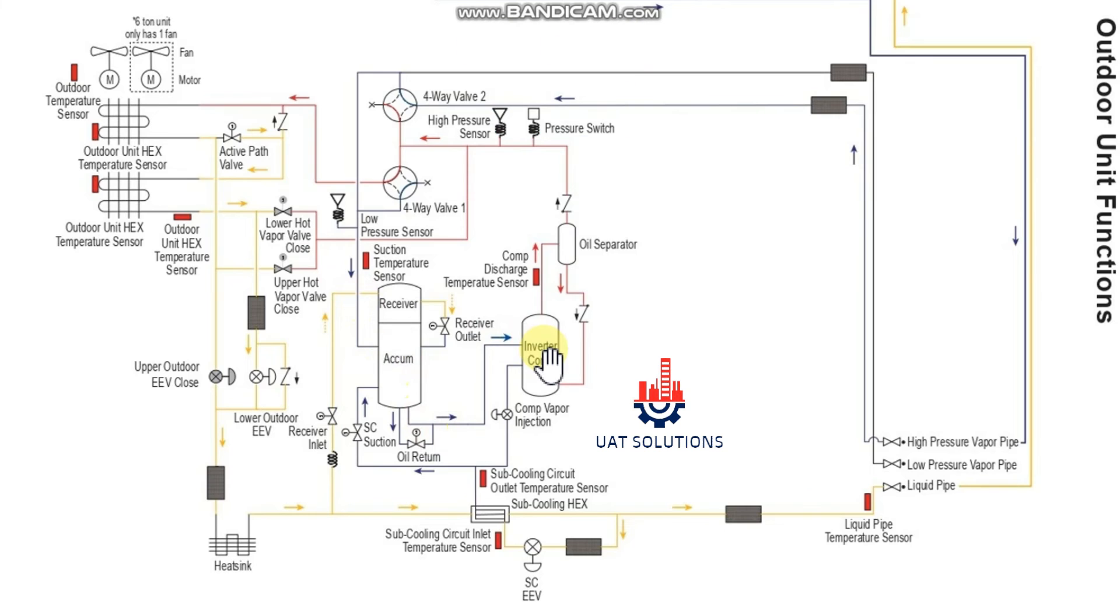From the bottom of the accumulator, an oil return line is branched into the compressor suction line for the oil to return.